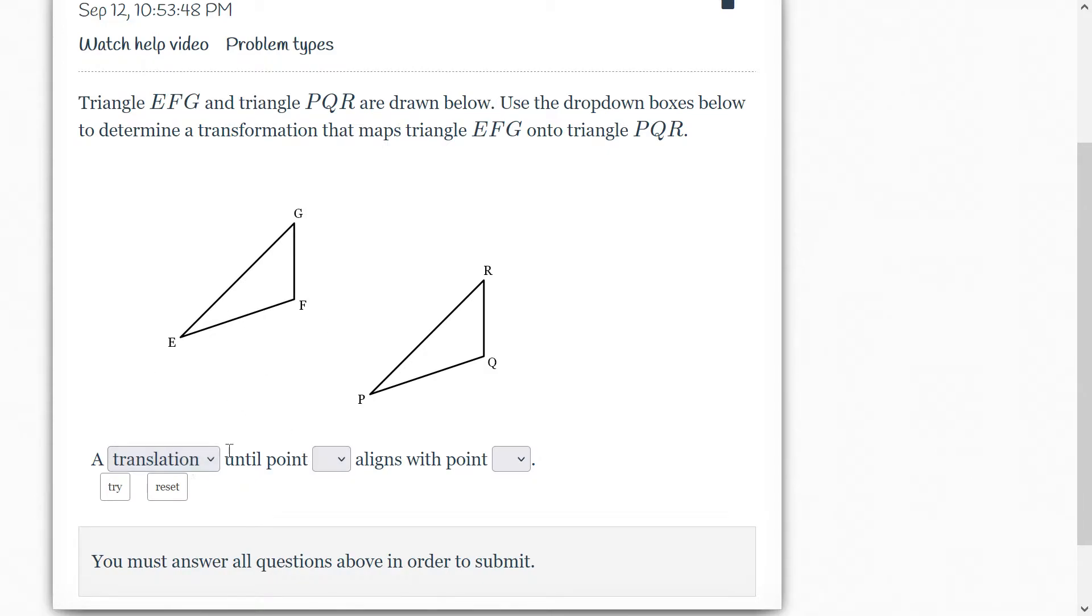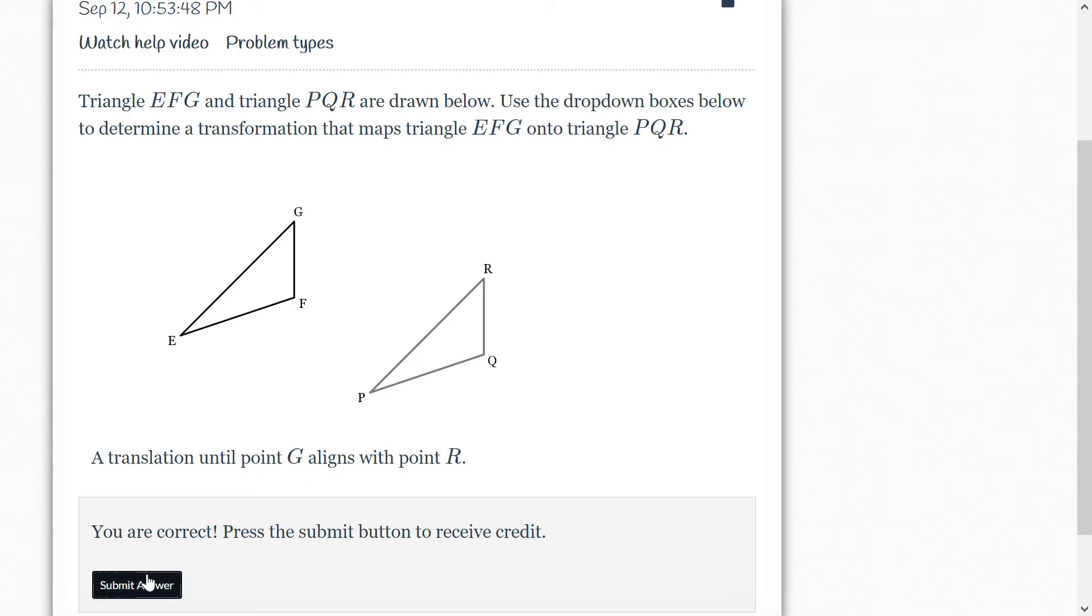How am I going to translate this? Well, until point, and you can actually pick whichever one you want here. Point G aligns with - now this one is important that we match this up. G should match up with point R, and we hit try. If it's correct it should map right on top and we can submit the answer there just like that.